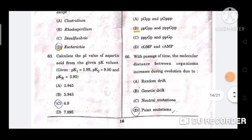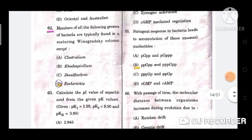Question number 65: Stringent response in bacteria leads to accumulation of these unusual nucleotides. Option is B, ppGpp and pppGpp.